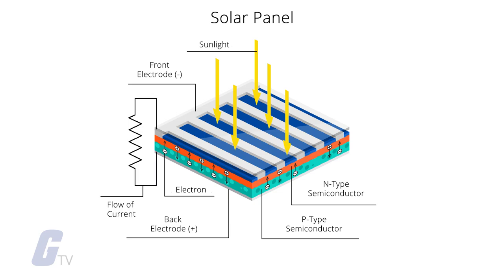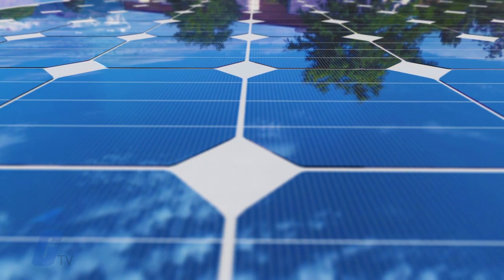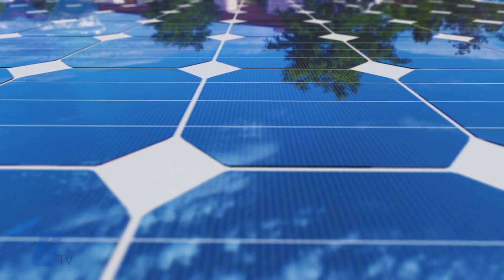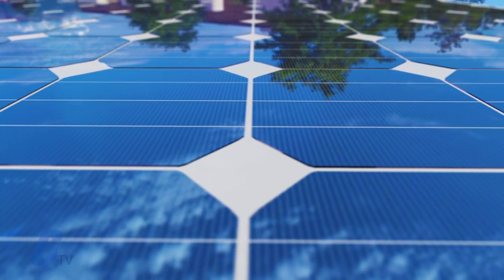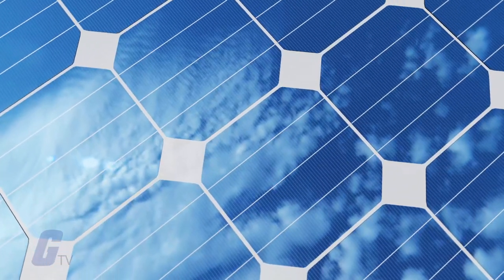When electrons flow through a circuit such as that, they generate electricity. Solar panels are made up of multiple cells, and you can wire multiple panels together to form a solar array. The more panels you deploy, the more energy you can generate.